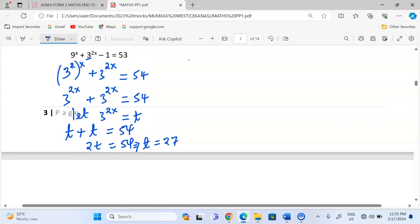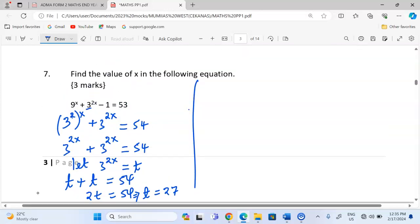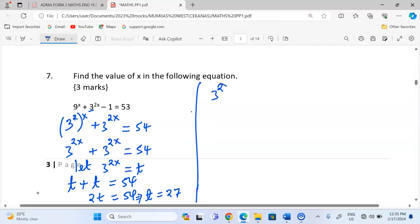Now you should remember that it is, whatever has been led to be t is 3 power 2x. And now that we have found t, which is 27, we can have it there.